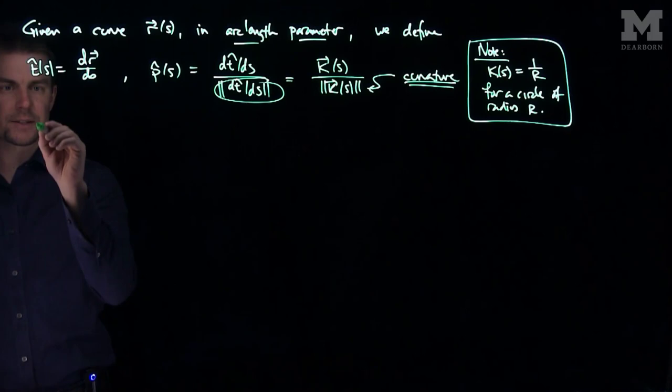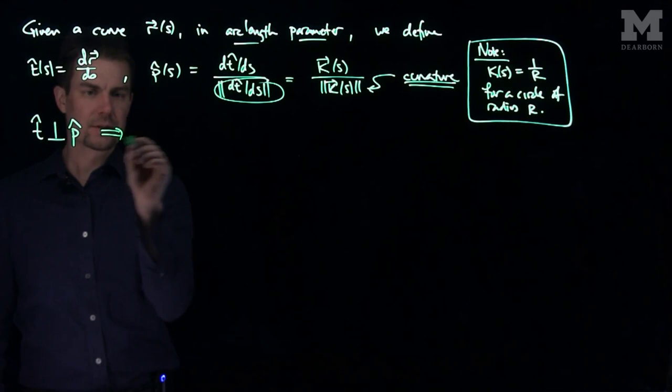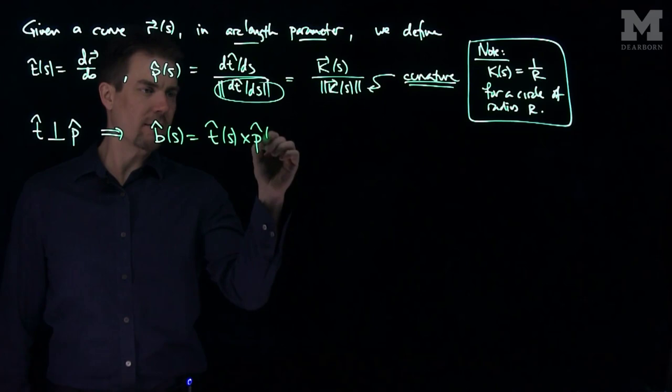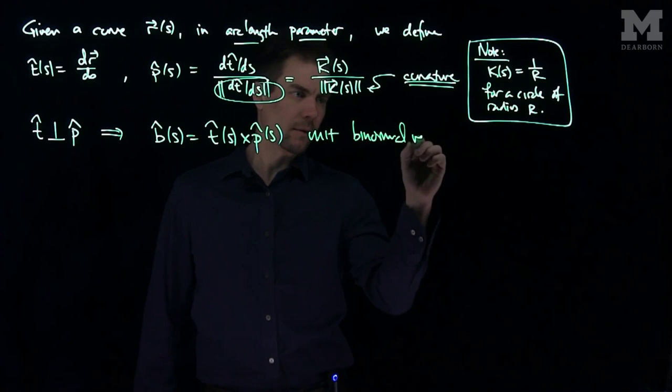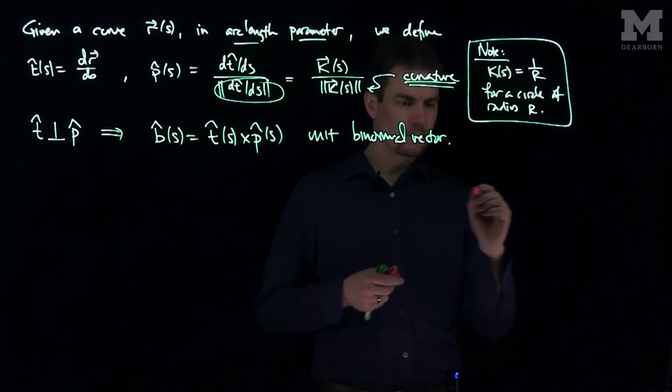Now once we have the curvature vector, what we can do is we can note that t-hat is perpendicular to p-hat, and this allows us to define b-hat of s, which is t-hat of s cross p-hat of s, and this is the unit binormal vector.